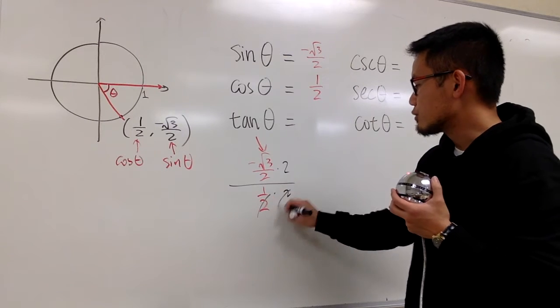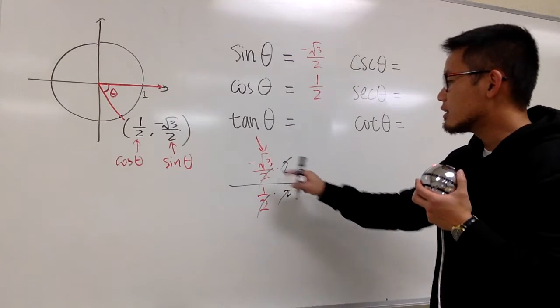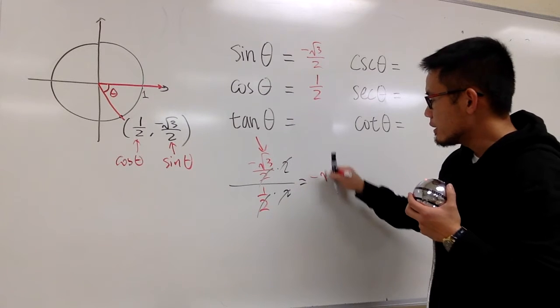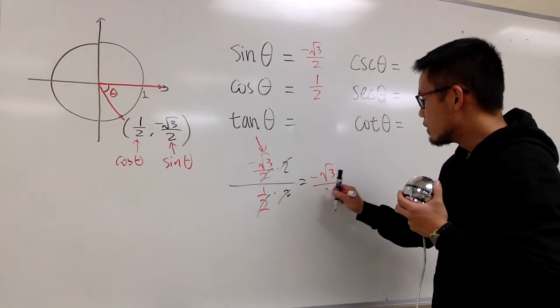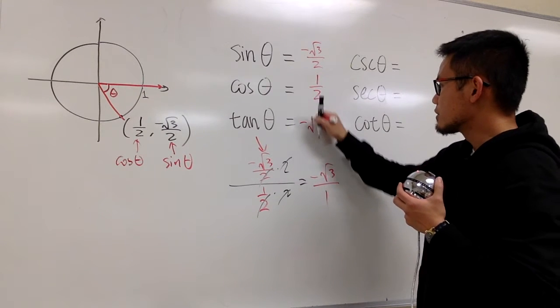This is a complex fraction. We can multiply the top and bottom by 2 so the 2s cancel each other out. Altogether, you get -√3/1, which is just -√3.